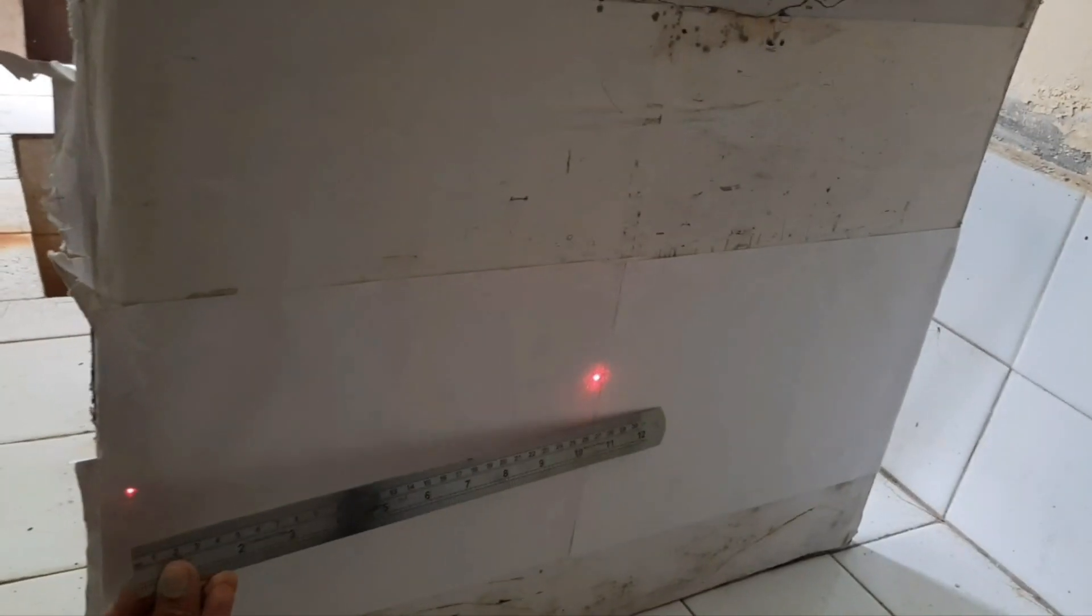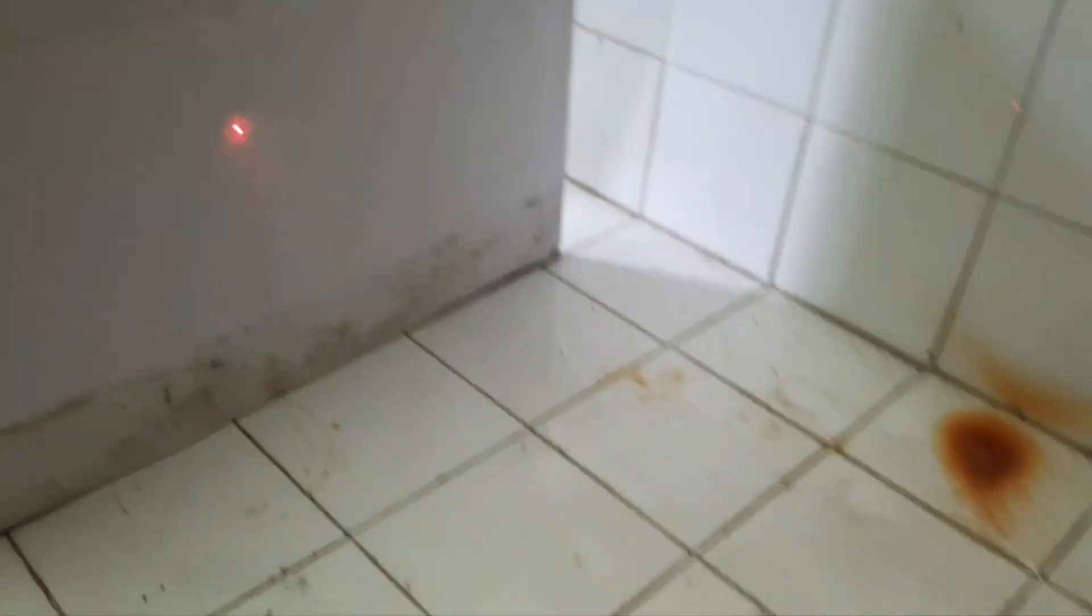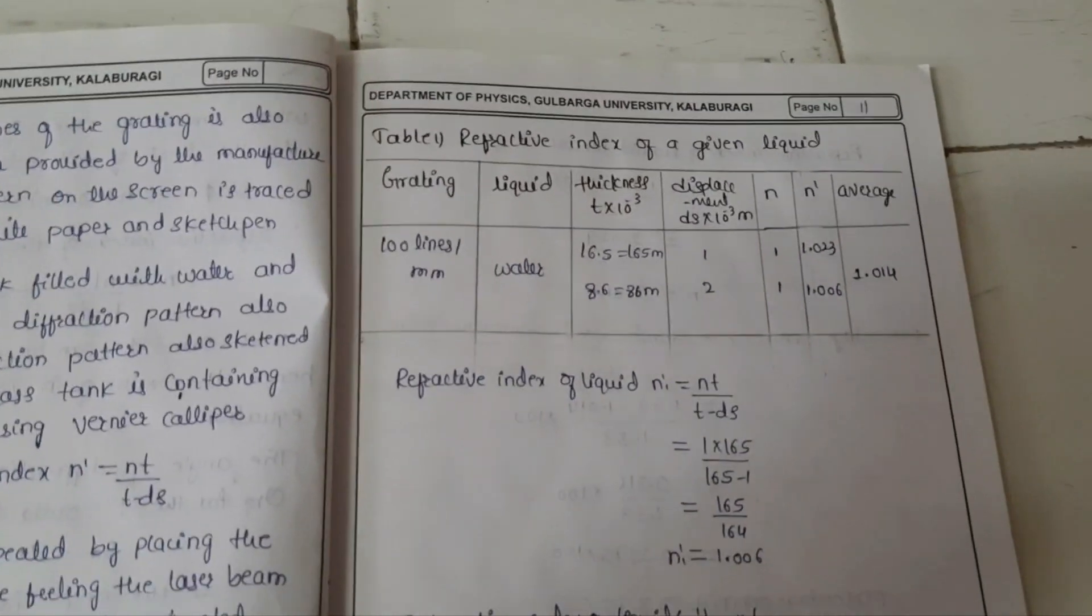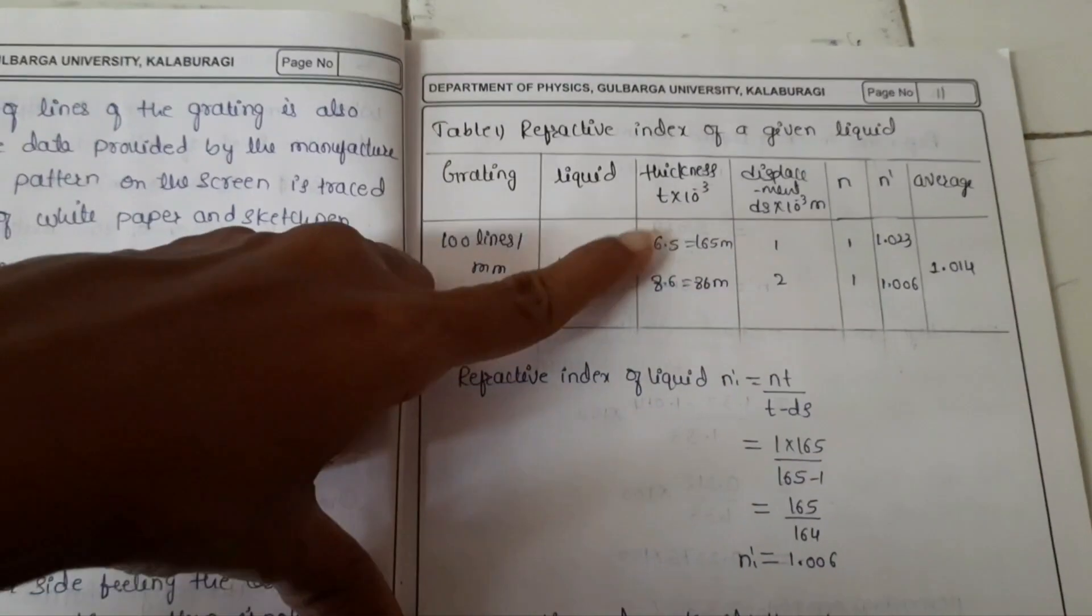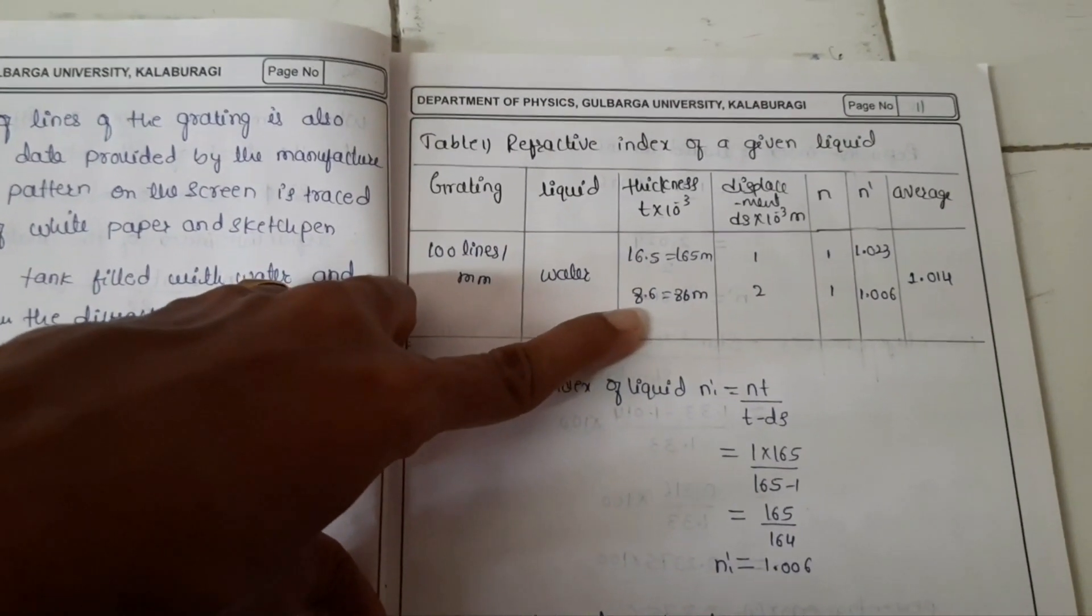So this shift is going to be very small, around 1 centimeter. So like that you have to take two readings here. So the displacement in the first order spot for thickness 16.5 vertical and horizontal 18.6.